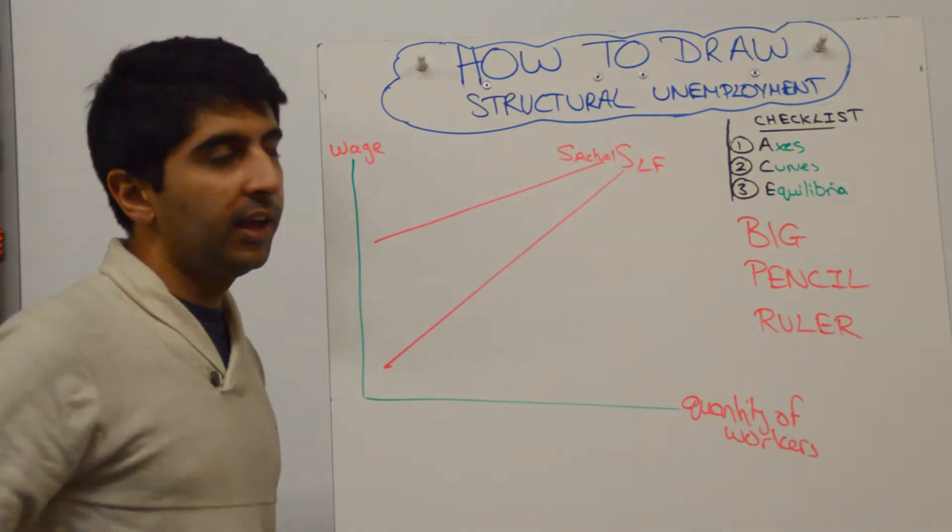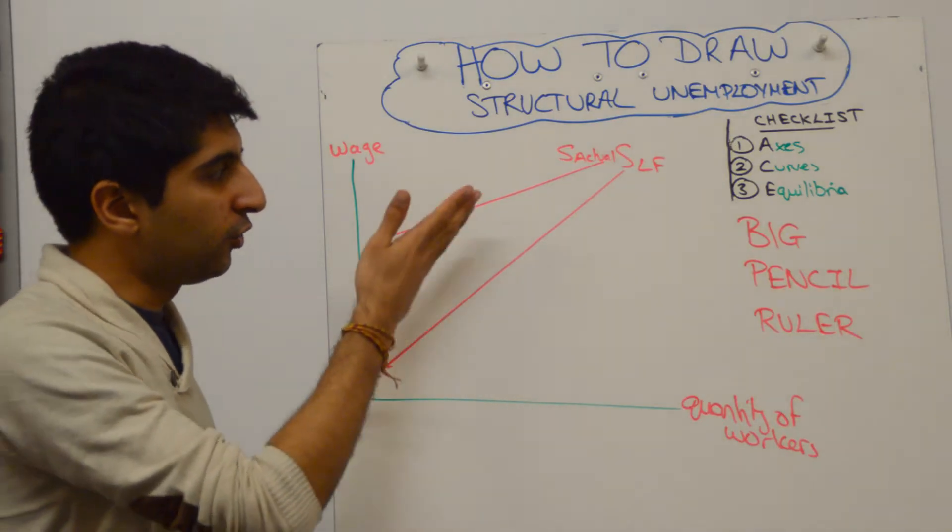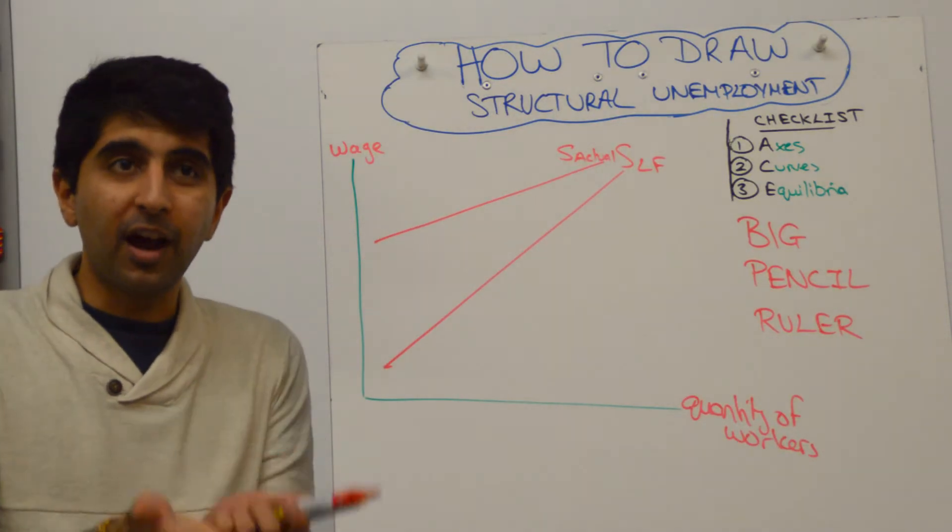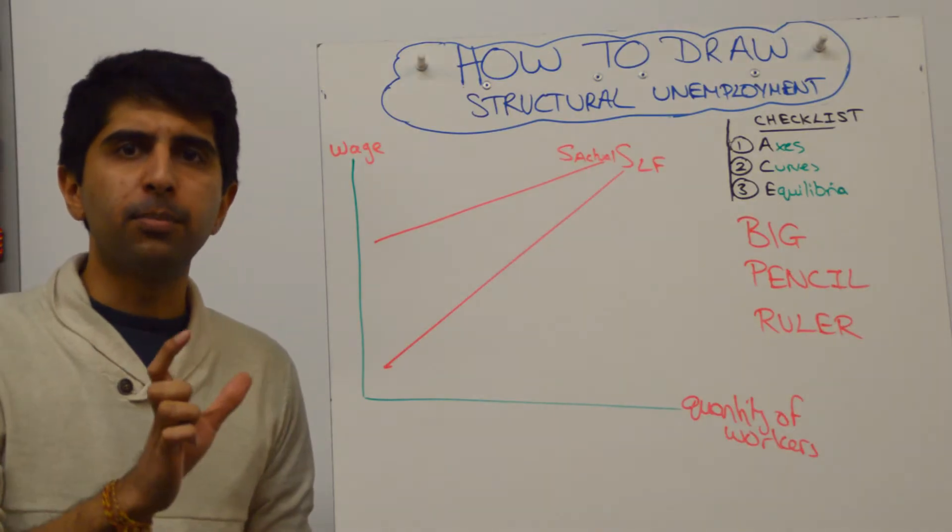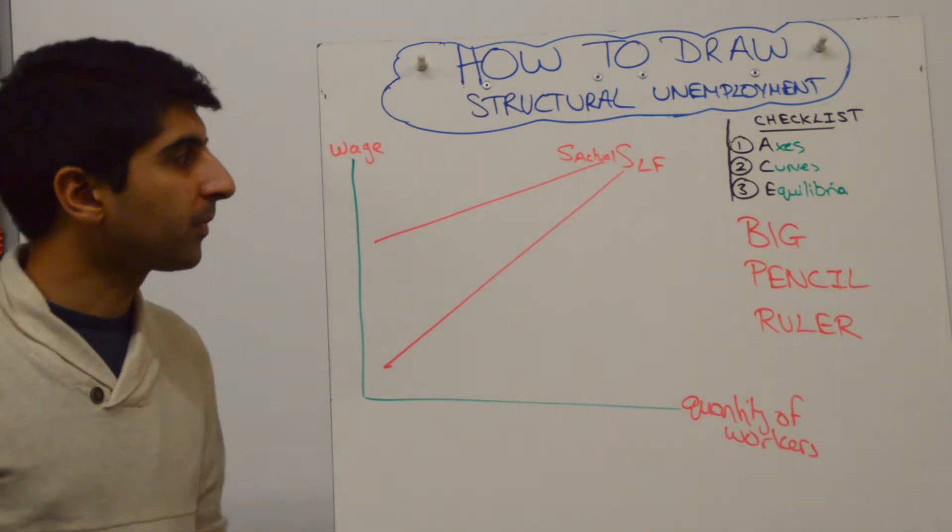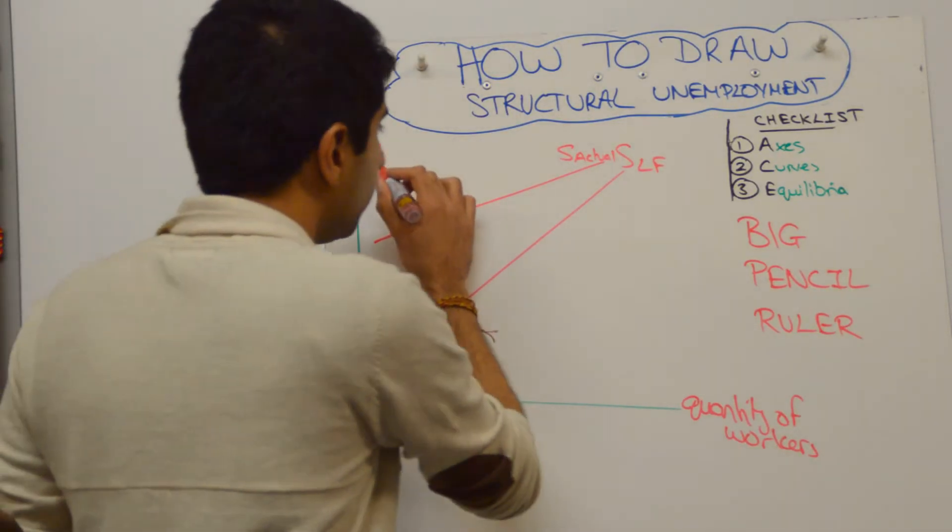Draw the actual labour supply curve to move closer to the labour force supply, which implies that at higher wage rates, there are less people that reject the job. Next, we need to draw our demand for labour.